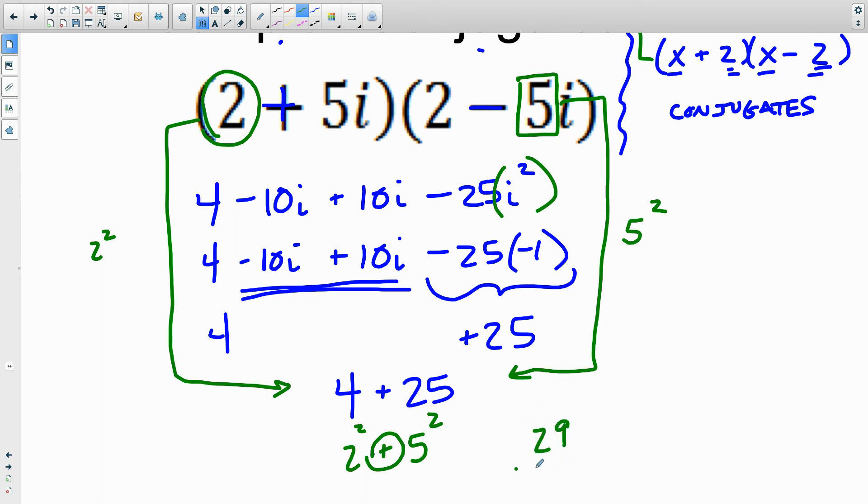So yes, this answer is 29. Complex conjugates will produce a single real number. And that real number will always be the sum of the squares of the real numbers that we see up here.